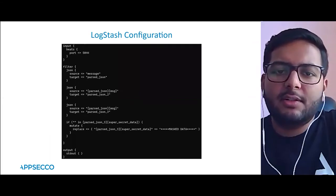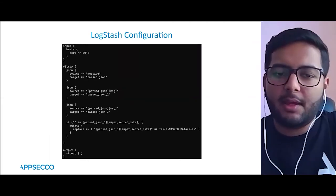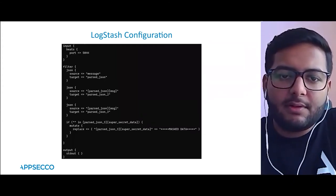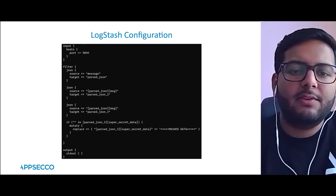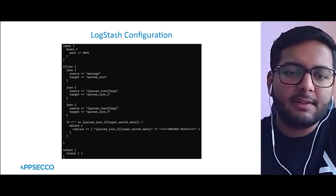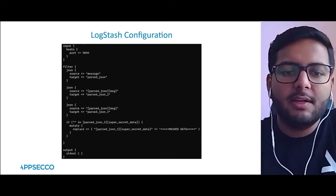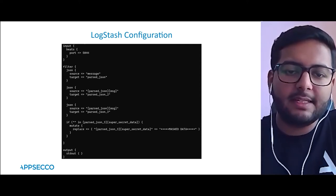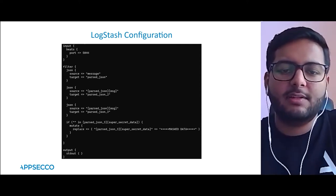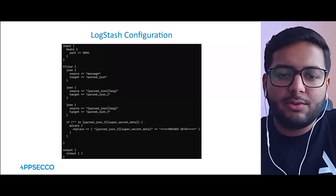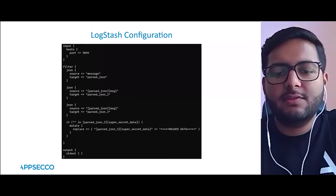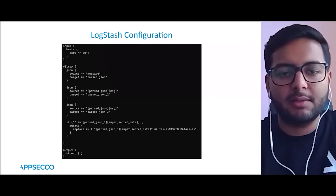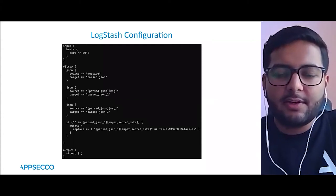This is the Logstash configuration I've written for this talk as a POC. We have a source log entry, which is a stringified JSON when it comes to Logstash. We first convert it into two other fields — parsed JSON 2 and 3. I've done this twice so you can see the difference between masked and unmasked output.